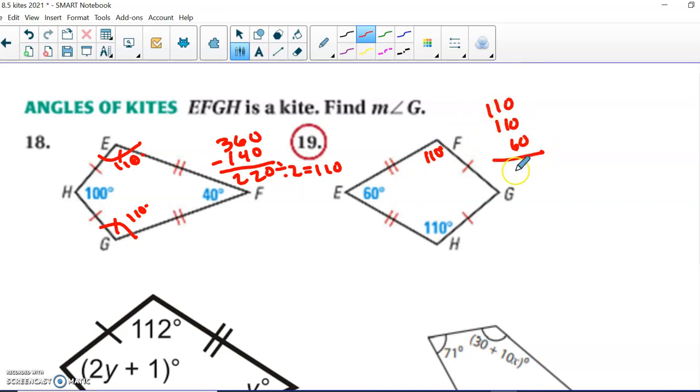We're going to subtract that from 360, and it looks like our missing angle is going to be 80 degrees. All right. Let's throw a little algebra in here.